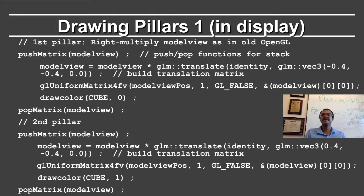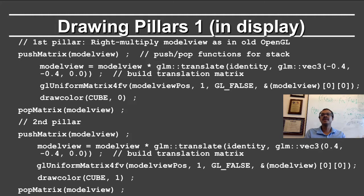We are providing one matrix, without transposing it, and passing the address of the first element of the matrix. The second pillar is exactly the same code, except the translation is different — it goes to 0.4, minus 0.4, and 0, instead of minus 0.4, minus 0.4, and 0. We have the same glUniformMatrix4fv and we draw the cube. Color 0 corresponds to red, color 1 corresponds to green, and so on.